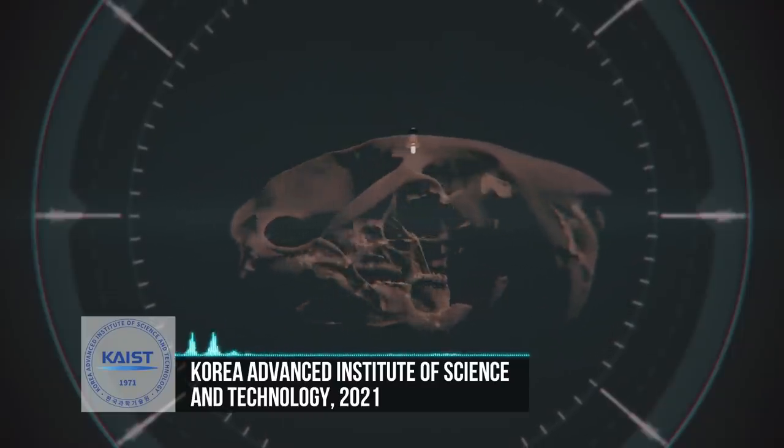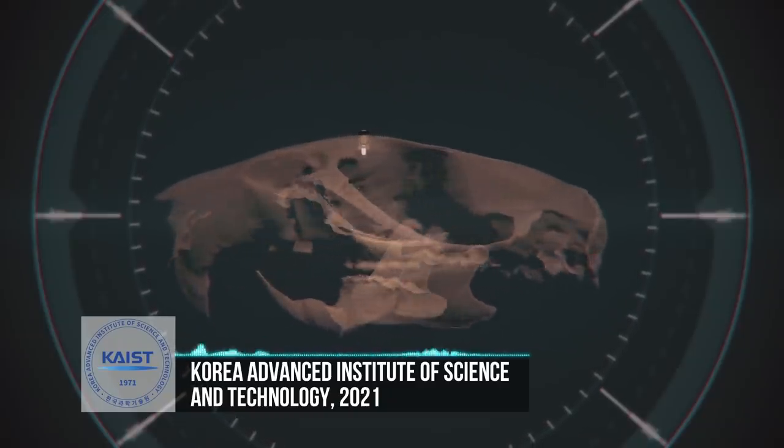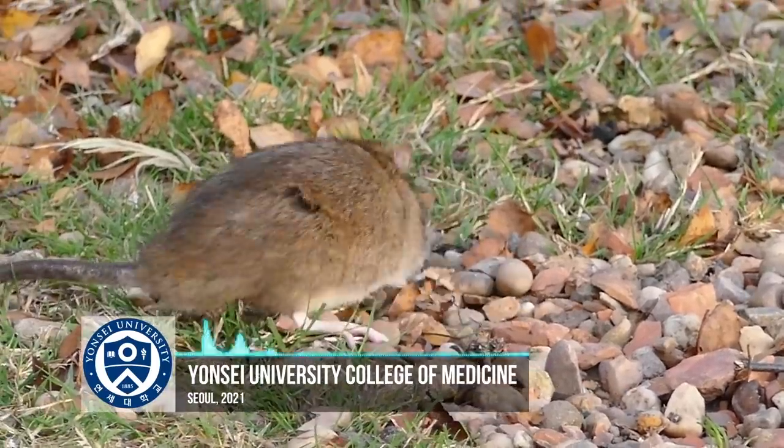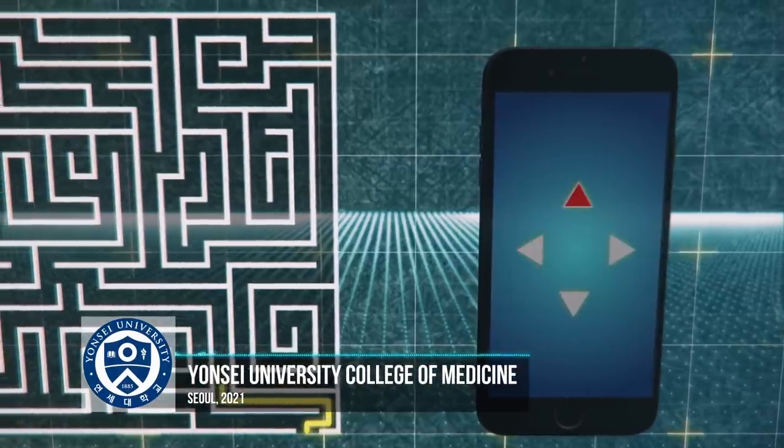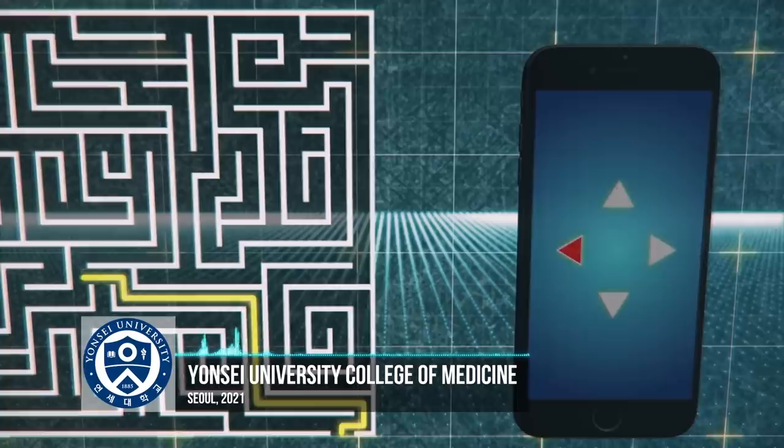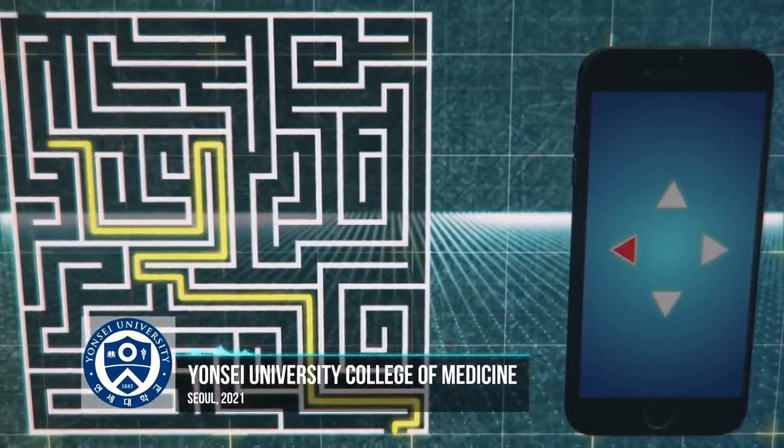This device can be used anywhere and at any time to control neural circuits. The fact that we can control the behavior of animals simply by manipulating a smartphone app is very interesting and stimulates a lot of imagination.